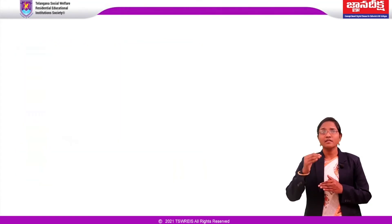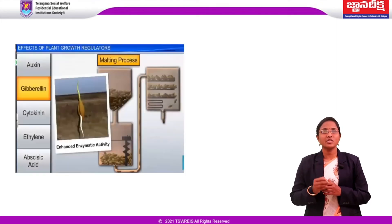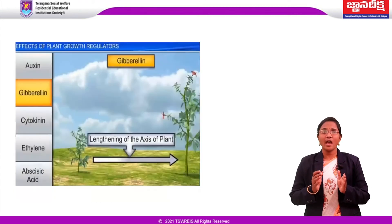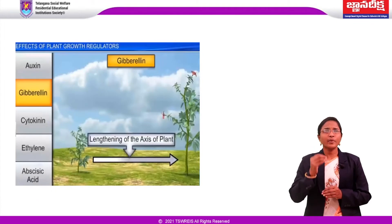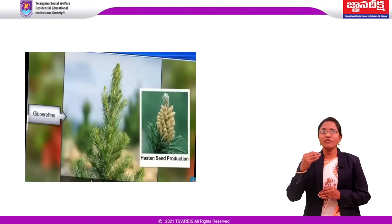Gibberellins delay senescence, meaning growing old. By delaying senescence, fruits can be left on the tree longer so as to extend the market period. GA3 is used to speed up the malting process in the brewing industry. Sugarcane stores carbohydrates as sugar in their stems; spraying gibberellins on sugarcane crops increases the length of the stem so that yield is increased by as much as 20 tons per acre. Gibberellins also promote bolting — elongation of the internodal region — in beet, cabbages, and many plants with a rosette habit.